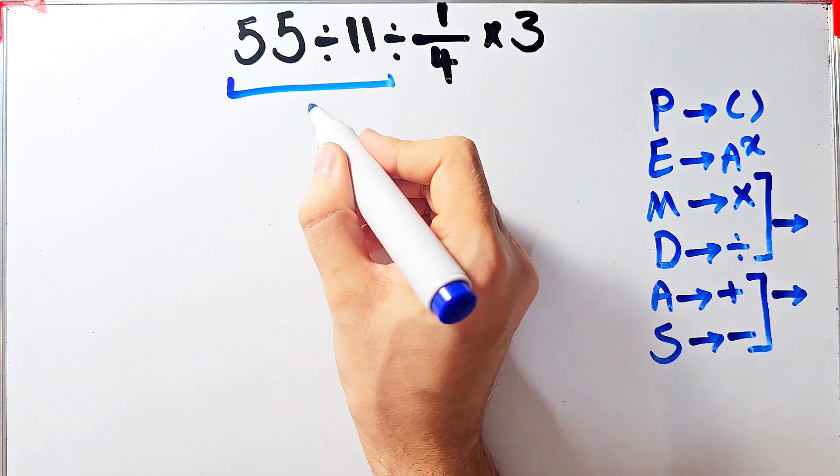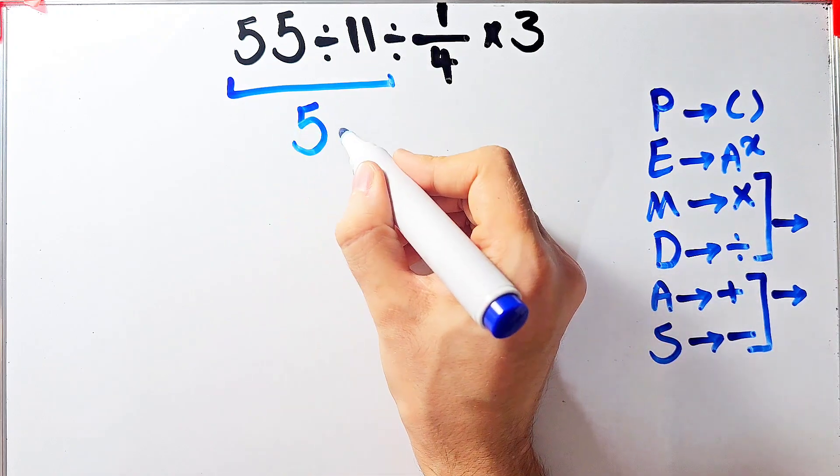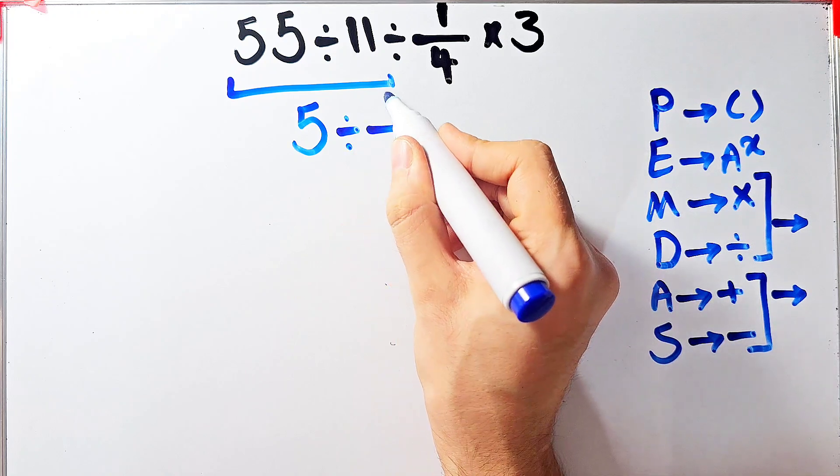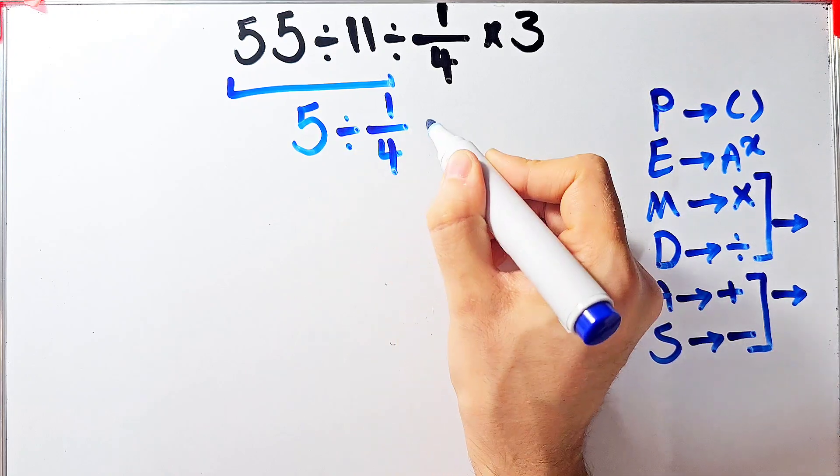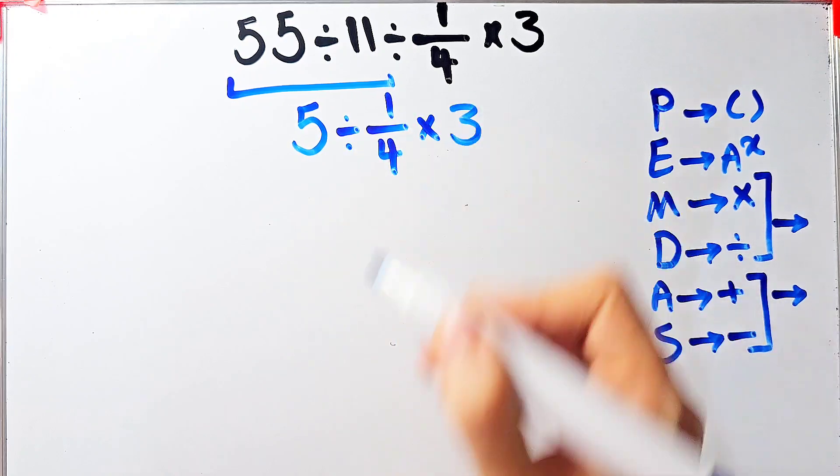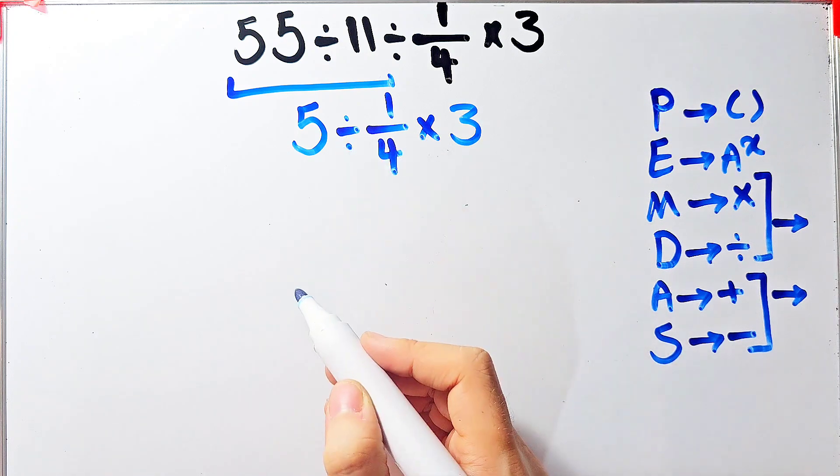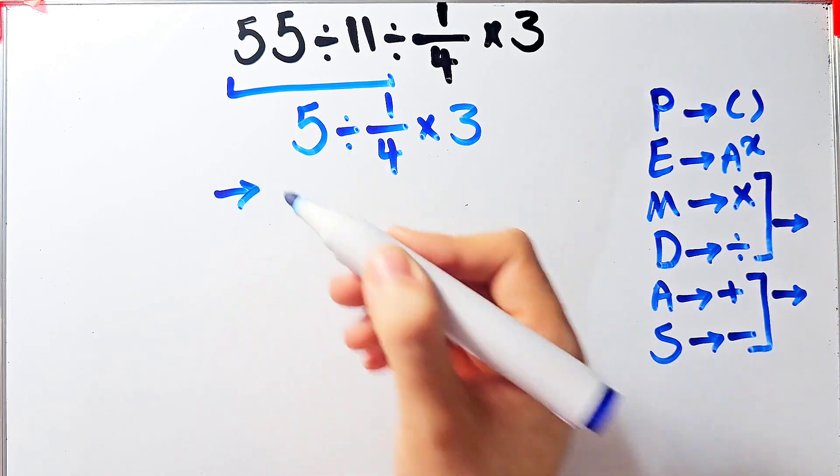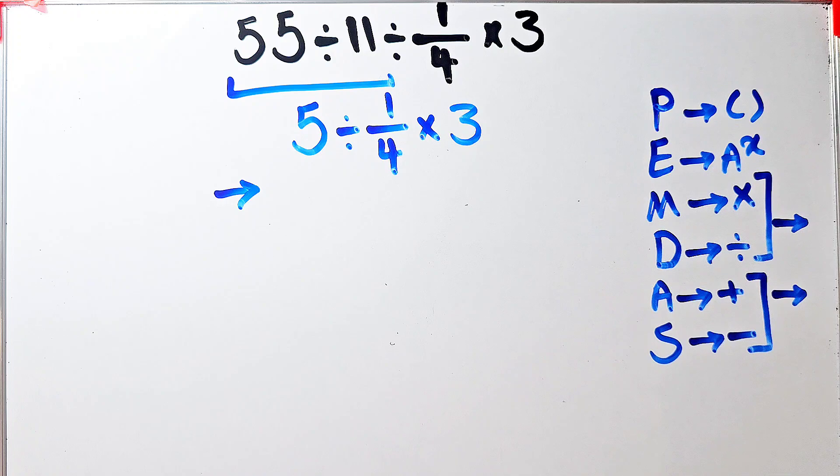55 divided by 11 equals 5. Now we have 5 divided by 1 over 4, then times 3. Again, we have division and multiplication, and we start from the left and simplify the question. To solve the first part we need to follow the KCF rule.